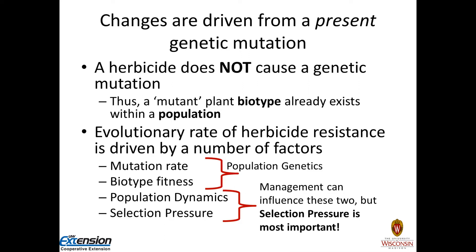What's important to understand is that the herbicide itself does not cause a genetic mutation. The genetic mutation that allows a plant to withstand the herbicide is already out there in nature. What we do is continually select for that one mutant plant that can tolerate the herbicide, and that biotype increases in numbers over time. It is an evolutionary process. A number of factors can influence that evolutionary process — some we have management influence on, and some we don't.